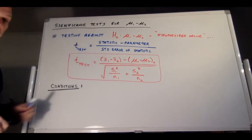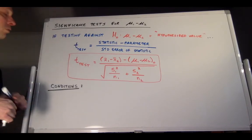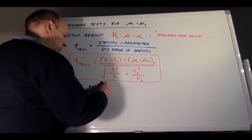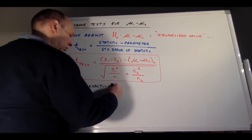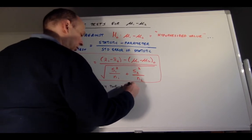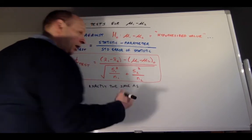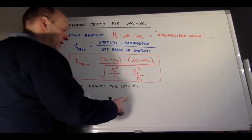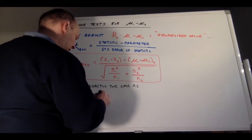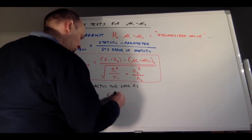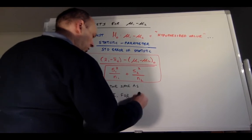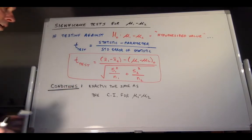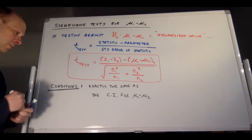Good news about the conditions for the significance test for the difference in two means: they're exactly the same as they were for the confidence interval for the difference in two population means. So the conditions are the same — no difference.